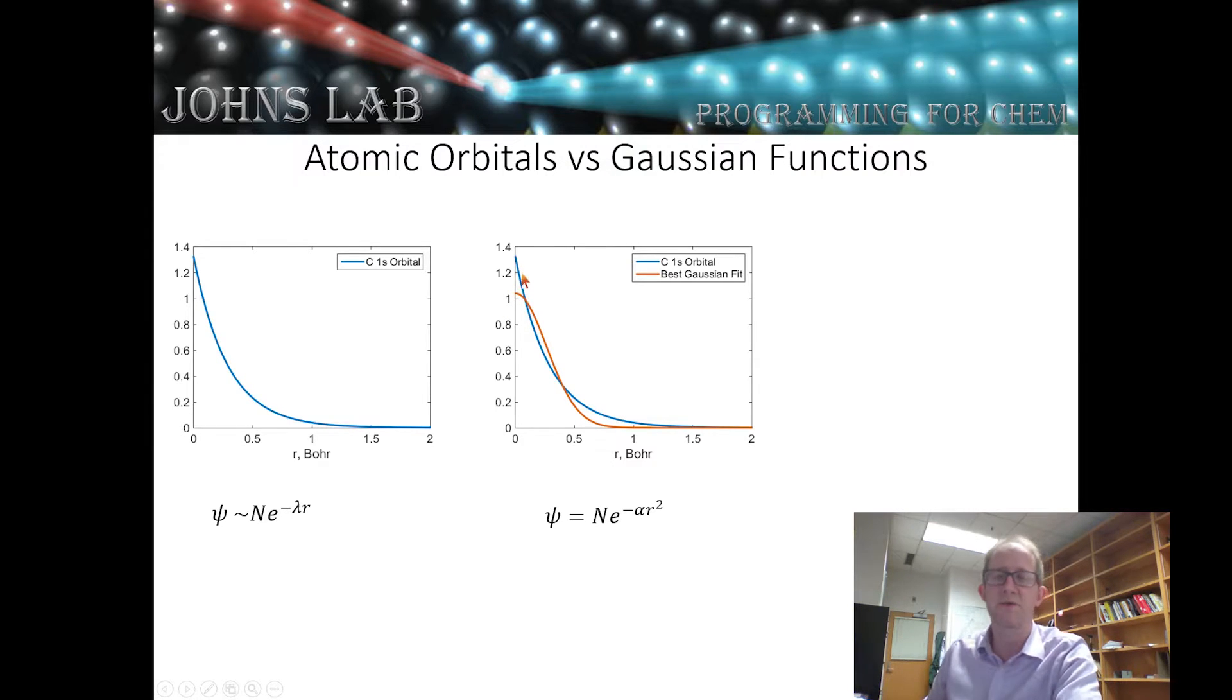But at some point we have to make a compromise between accuracy and speed. And so we're going to use six Gaussian functions for a 1s orbital.